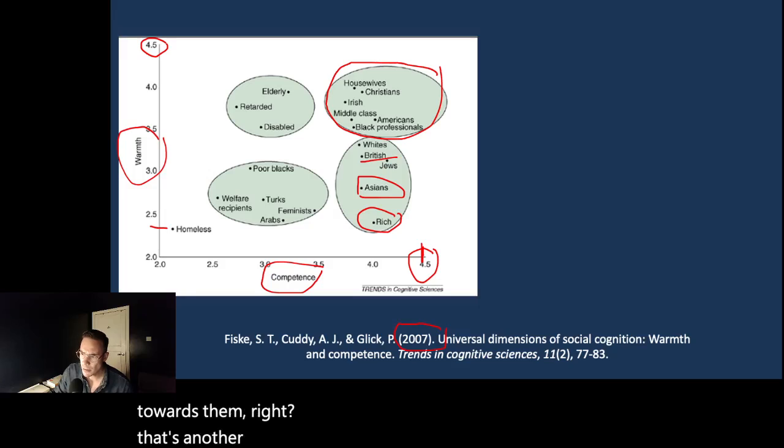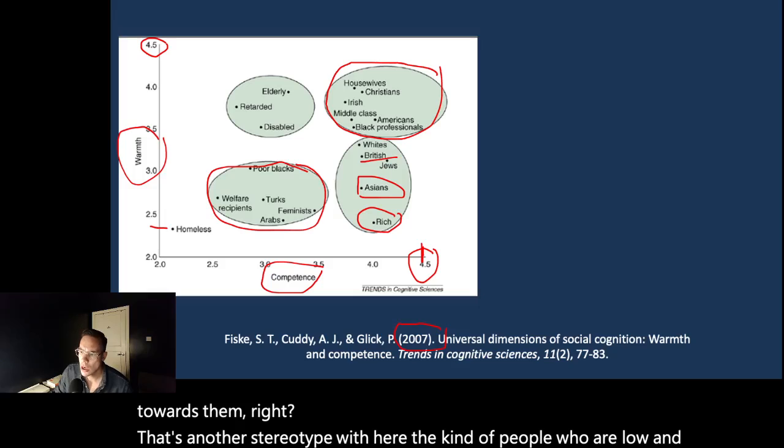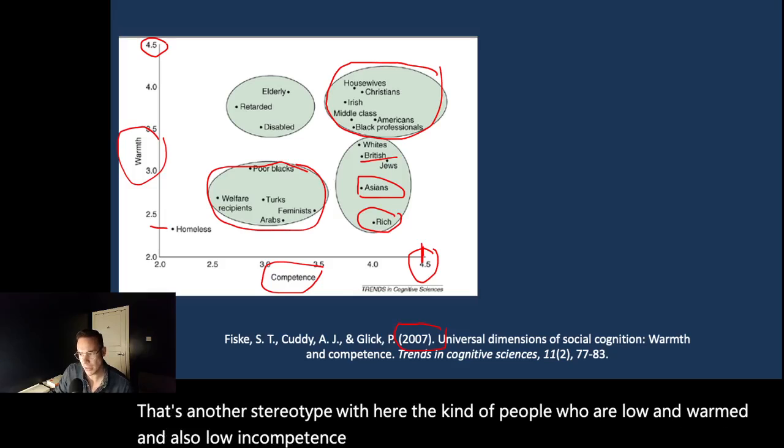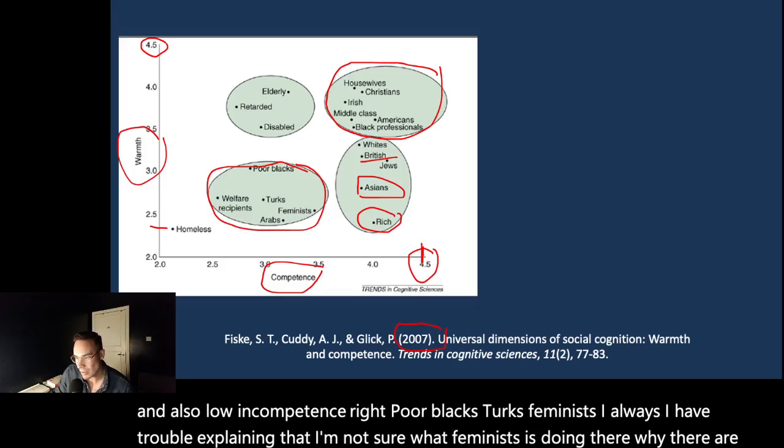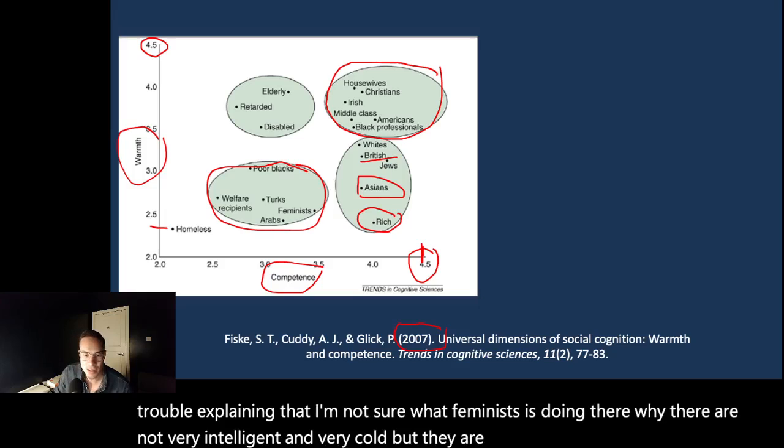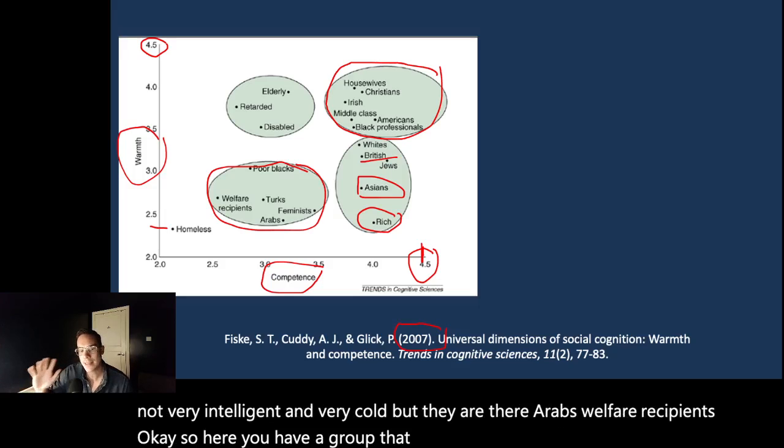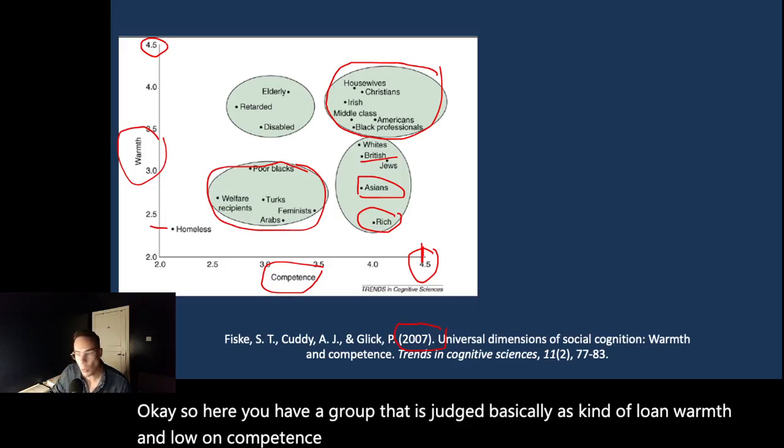We have here the people who are low on warmth and also low on competence. Poor blacks, Turks, feminists—I always have trouble explaining that, I'm not sure what feminists is doing there, why they are not very intelligent and very cold, but they are there. Arabs, welfare recipients. So here you have a group that is judged basically as low on warmth and low on competence. And I'll explain a bit more why these two dimensions evolve.